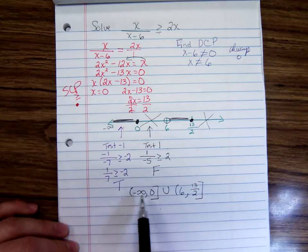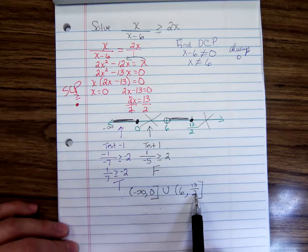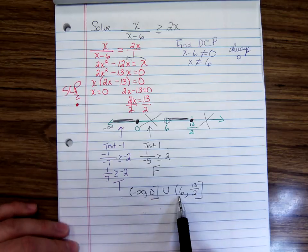So anything to the left of 0, including 0. Anything between 6 and 13 halves, not including 6, but including 13 halves.